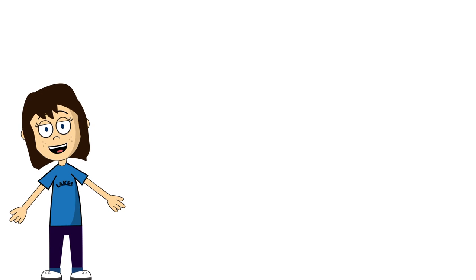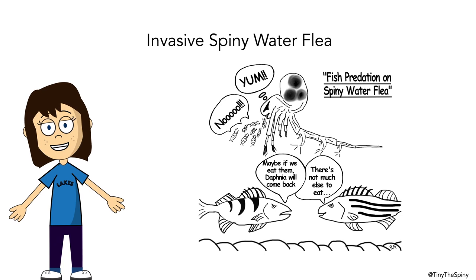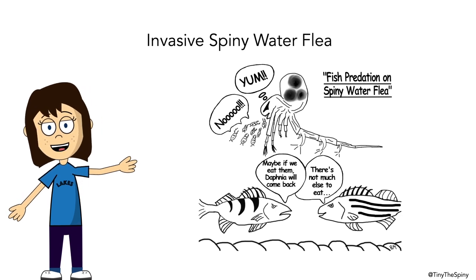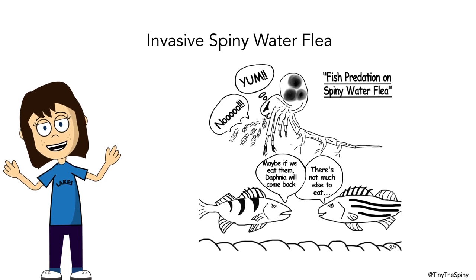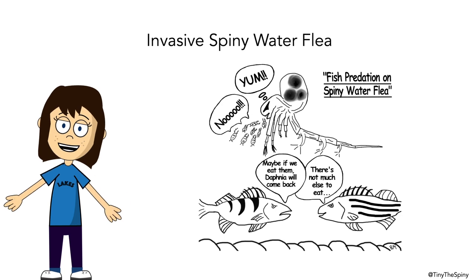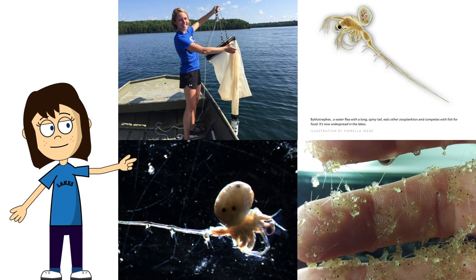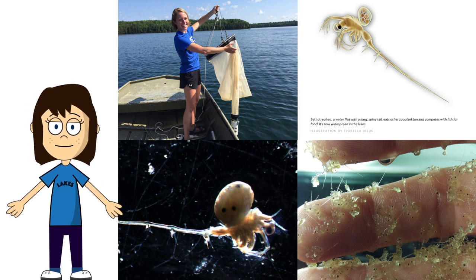So what happened in Lake Mendota in 2008–2009? One thing that happened was that the food web changed due to the arrival and population explosion of the spiny water flea. Although the spiny water flea is a zooplankton species, this invader is not a grazer — it's a predator that eats other zooplankton, especially Daphnia. The spiny water flea (Bythotrephes longimanus) is native to the freshwater lakes of Europe and Asia, made its way to the Great Lakes around 1984, and probably reached our lakes not too long after.